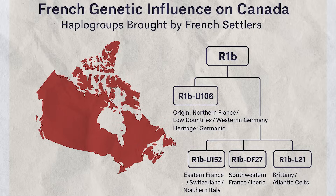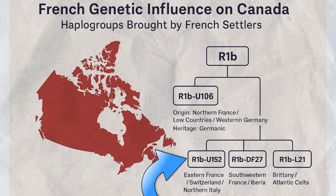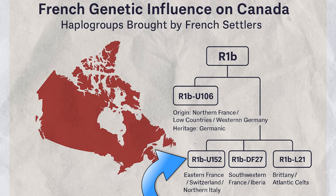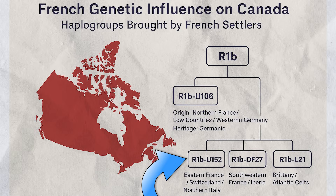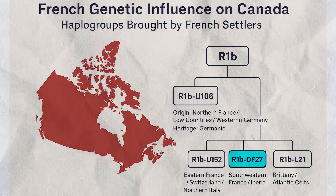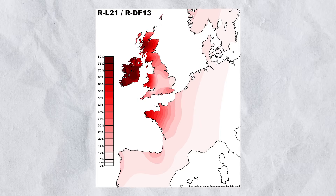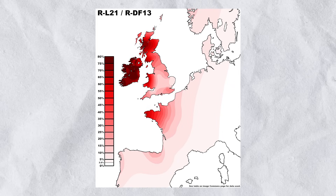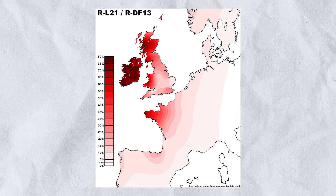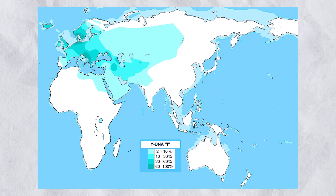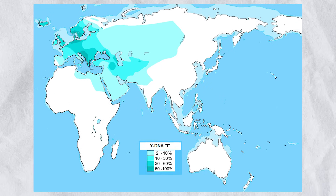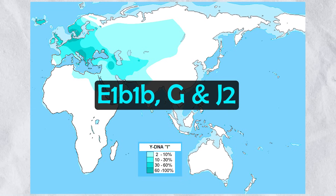The subclades of R1B-P312 included R1B-U152, common in Eastern France, Switzerland, and Northern Italy, associated with the Italic Celts. Another subclade was R1B-DF27, common in south-western France and Iberia, and also R1B-L21, more common in Brittany and amongst the Atlantic Celts in general. Other Y-DNA haplogroups brought in by French settlers included I1 and I2, and smaller amounts of E1b1b, G, and J2.